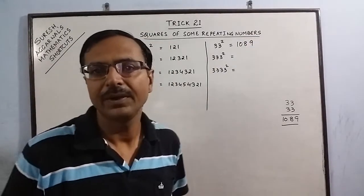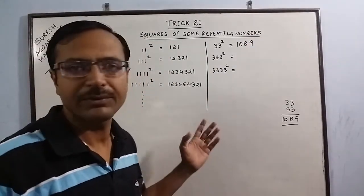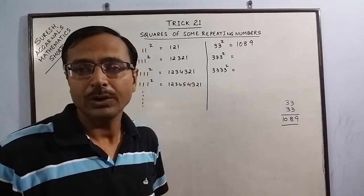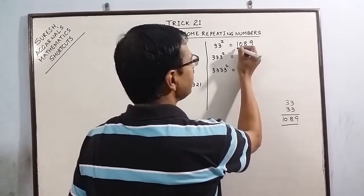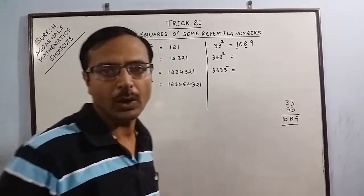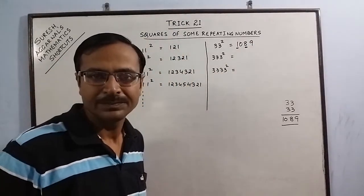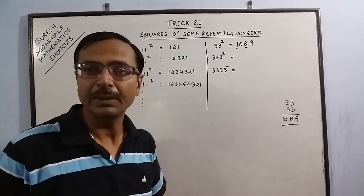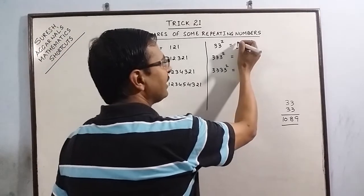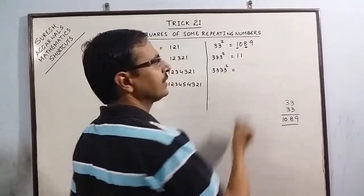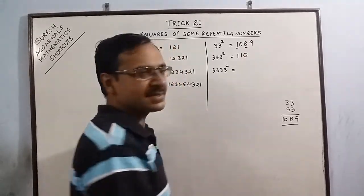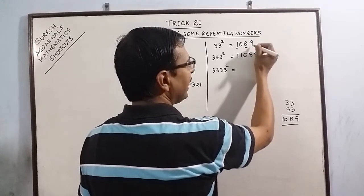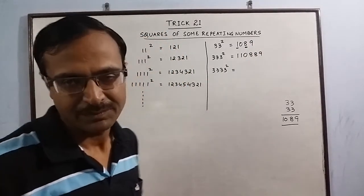Once you know the square of 33, you can find the squares of larger numbers involving 3s, say 333 square. What you have to do is just see the first and third numbers, that is 1 and 8, and keep on increasing these two numbers by one more quantity. Here we have 1 one, so we have 2 ones here. Zero will retain its place. 1 eight here, we will have 2 eights, and 9 will be as it is.